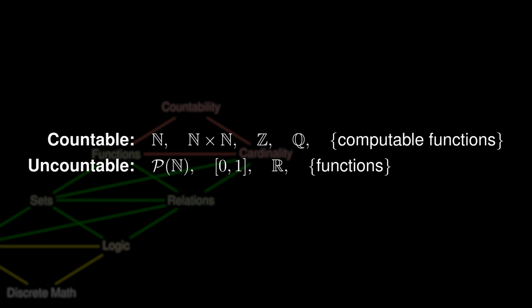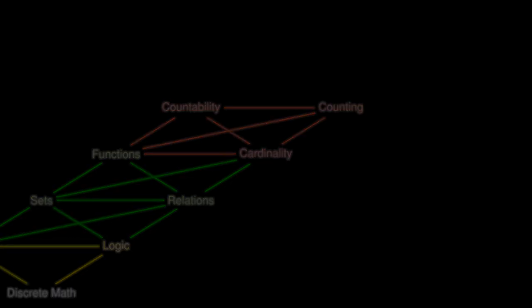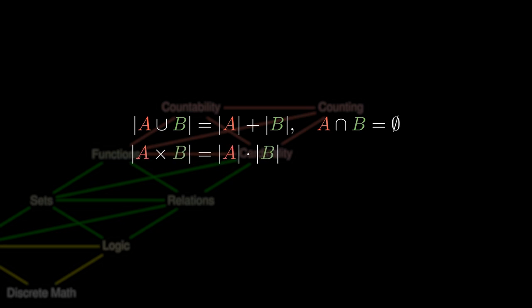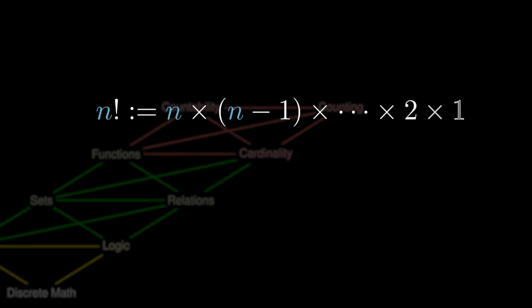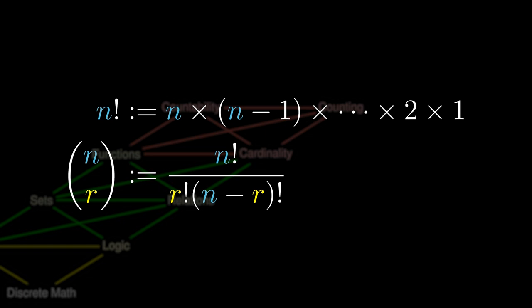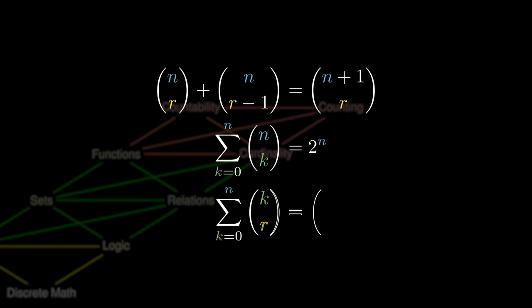While we can talk about countably infinite sets, it is also useful to derive several counting principles for finite sets. The number of elements in a union is the sum of the number of elements when the two sets are disjoint. The number of elements in a product is the product of the number of elements, and likewise for set differences. The factorial of n, defined by descending multiplication, is a really useful notion in combinatorics, which helps us define the n-choose-r quantity — intuitively telling us how many subsets of size r we can obtain from a set of size n. These counting techniques equip us with many useful combinatorial identities.